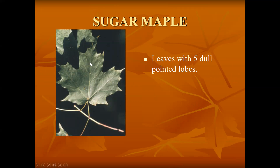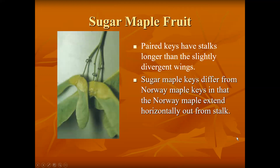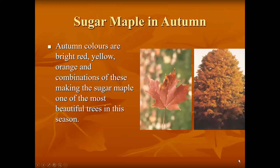Two lobes at the bottom, two in the middle, and one at the top. All sugar and other maples have paired keys — this is what classifies a maple: a double seed with a wing on each seed. Sugar maples in autumn are red, orange, and yellow.